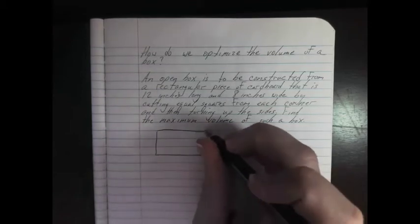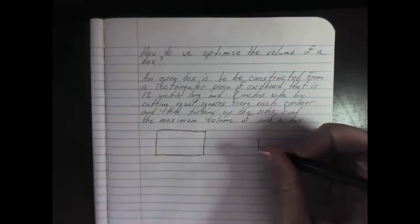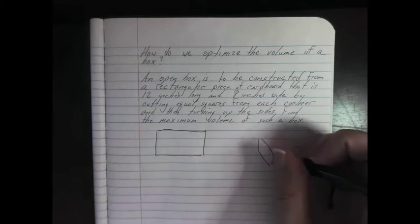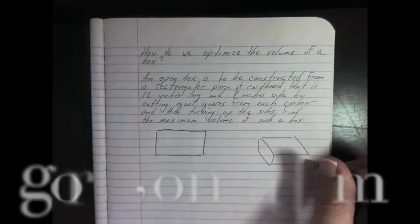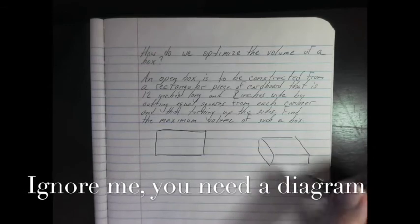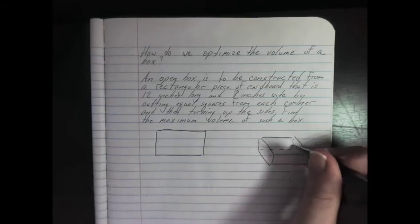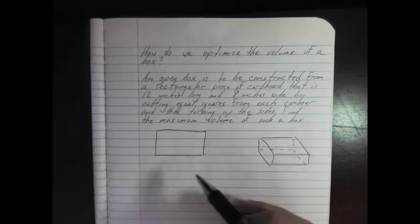We're going to have our two-dimensional image, and then we're going to have our three-dimensional image. You don't really have to draw a diagram for the 3D one, but it can really help out. So I guess you kind of have to. Here's our sheet.